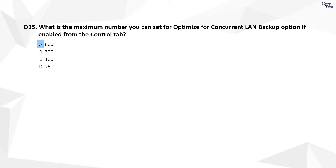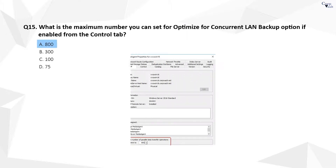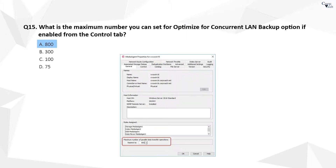Question 15. The correct answer is A. If the Optimize for Concurrent LAN Backup option is enabled from the Control tab, then the default is set to 100, and this value can be set to a maximum of 800.